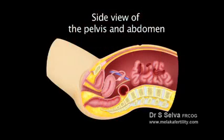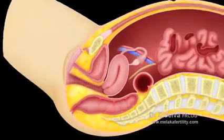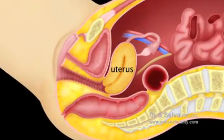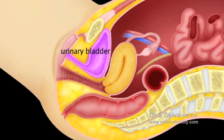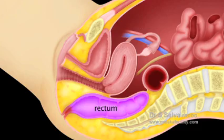This is the side view of the pelvis and abdomen. The uterus is in the centre. On the side and behind the uterus are the fallopian tubes and the ovaries. In front of the uterus is the urinary bladder and behind it is the rectum.